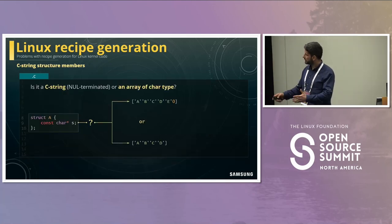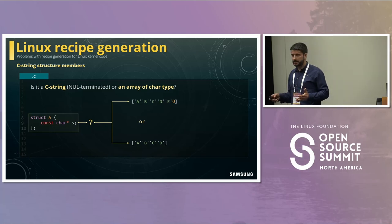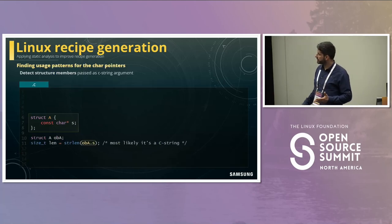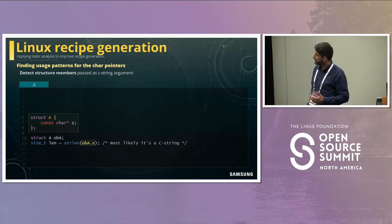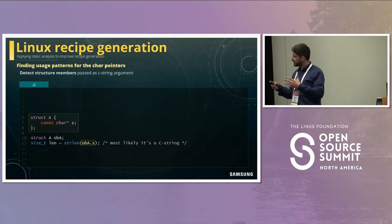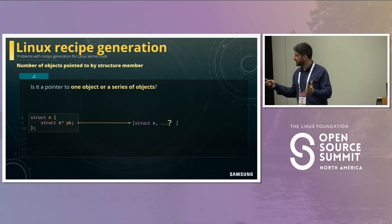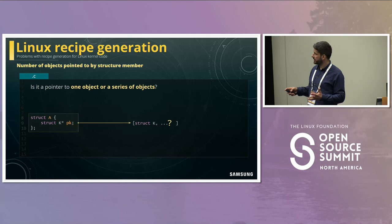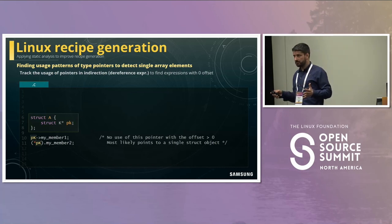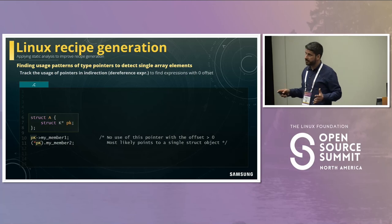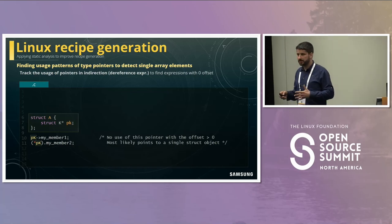Another problem is const char pointers. Is it pointing to a C string terminated by a zero byte, or to an array of characters of specified size? We can check whether the member was passed to functions we know take a C string as an argument, like strlen. If so, we can deduce that our member is an actual C string, because otherwise the original kernel code would fail. For a pointer to struct k, we can check all dereference expressions of our member pk and verify whether there is a dereference offset different than zero used. If not, we can deduce that pk is pointing to a single element, not an array.